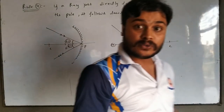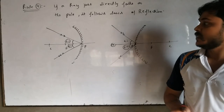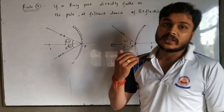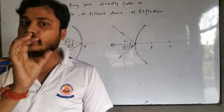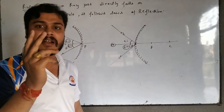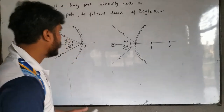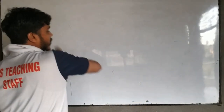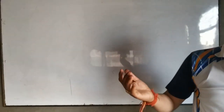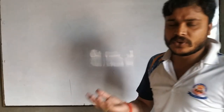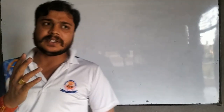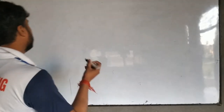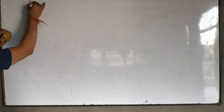We have now studied all 4 rules for image formation by the spherical mirror. These 4 rules are applied to image formation, but we have to apply only 2 rules at a time. There are 4 rules because if one rule sometimes fails, there is another rule to apply. For image formation, we only need 2 rays. Now let us come to the next topic.